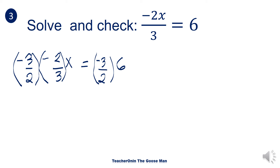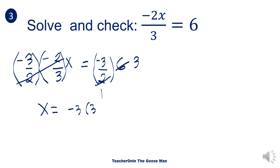We can factor this out, so x is equal to negative 3 over 2 times 6. Note that 2 and 6 share a common factor — divide by 2: this becomes 1, and 6 divided by 2 equals 3. So we have negative 3 times 3, meaning x is equal to negative 9.